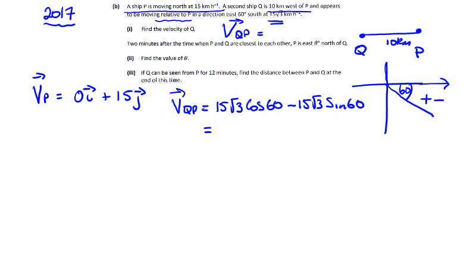So we have half of 15, so 7.5√3 in the i direction, and then the j direction we have minus sine 60, which is √3 over 2 in the j direction. So it's going to be 7.5√3 in the i and minus 45 over 2.